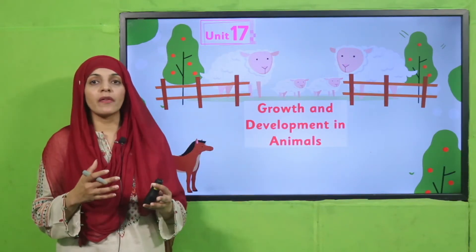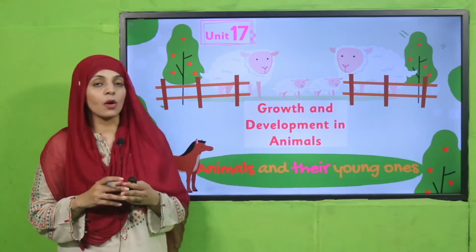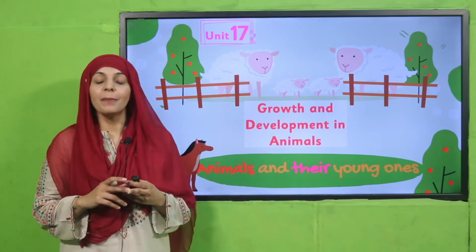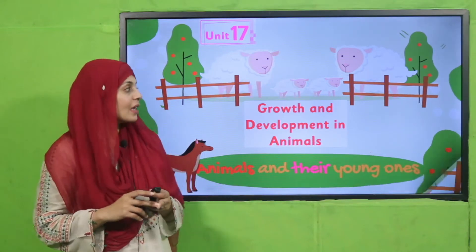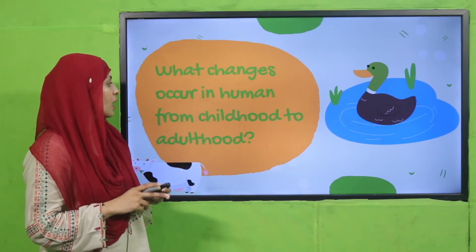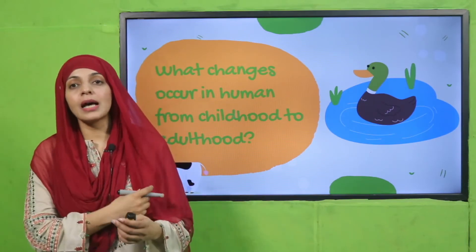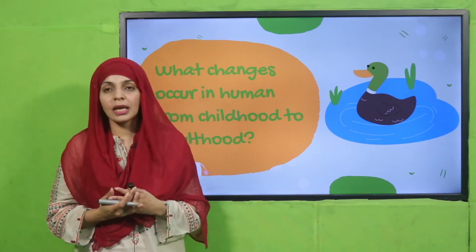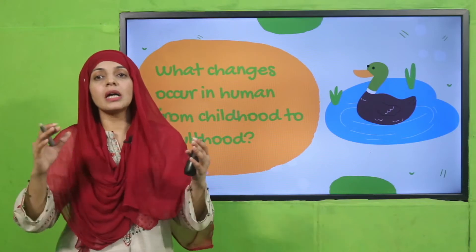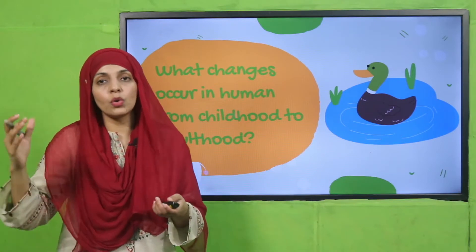In today's lecture we will study the names of animal young ones. Let's start with a recap: what changes occur in humans from childhood to adulthood? With time, they grow in height, they become more strong, they become more independent. These are the different changes we observe when human beings grow from childhood to adulthood.